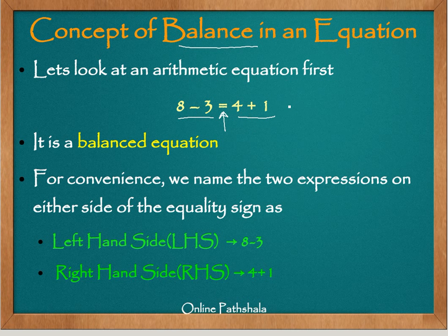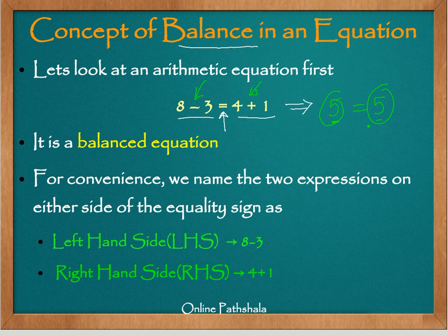Let's look at the two sides and evaluate both expressions. 8 minus 3 gives us 5, and 4 plus 1 also gives us 5. So both sides evaluate to the same value, which is 5. This type of equation is known as a balanced equation — in fact, an equation is always balanced.